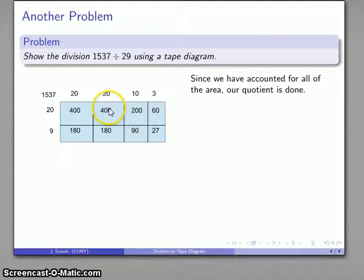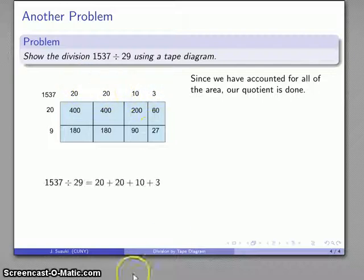So let's see that's 400, 800, 1000. Let's see what else can I group here. Well how about these 200, so that's 1200, 80 and 80 is 160 so that's 1360, 1460 minus 10 is 1450 plus 60 is 1510 and 27 is 1537. So all of our area add up to 1537 which is all we have. So that says all of the area is accounted for and the length is the quotient so that's going to be 20 plus 20 plus 10 plus 3 and I can just add those together to get my quotient 53.